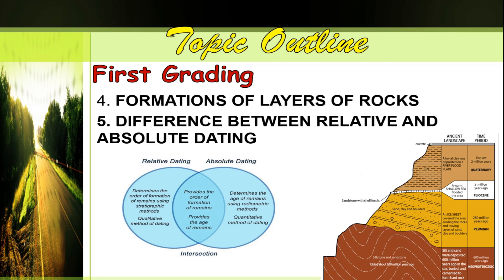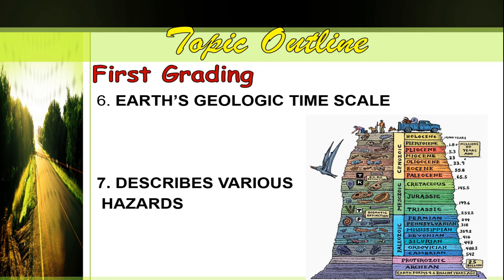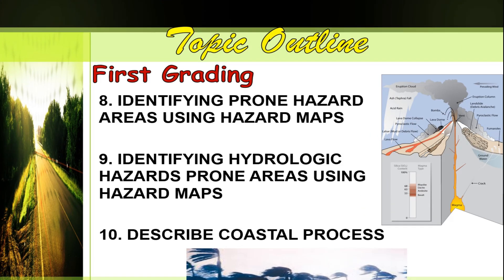For the fourth topic for the first grading period, we are going to deal about the formations of layers of rock, together with the number five topic, the difference between relative and absolute dating. Our sixth topic will be Earth's geologic timescale, where we are going to learn why dinosaurs went extinct, and describe various hazards that affect the extinction of these organisms. Next, we are going to identify prone hazard areas using hazard maps, identify hydrologic hazard prone areas, and describe the coastal process.